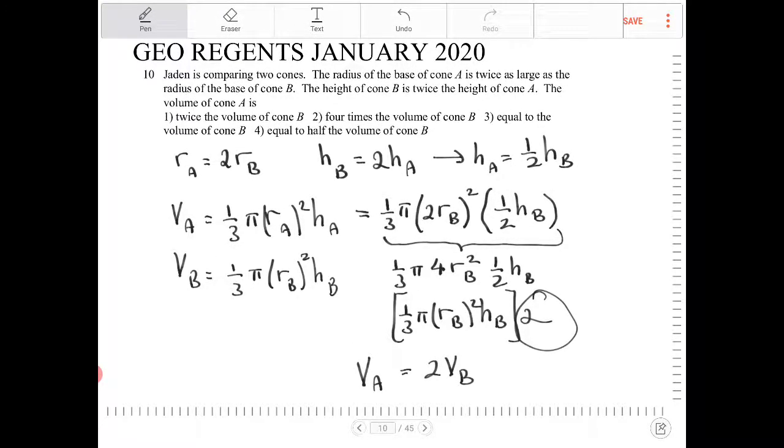And which option is that? The volume of cone A is twice the volume of cone B. And that's pretty much it. The others don't really work. It's not 4 times. It's not equal to. And it's not equal to half. It's 2 times the volume of cone B.